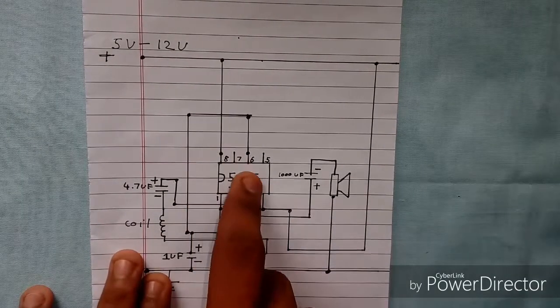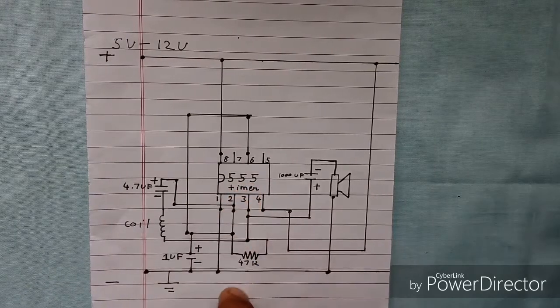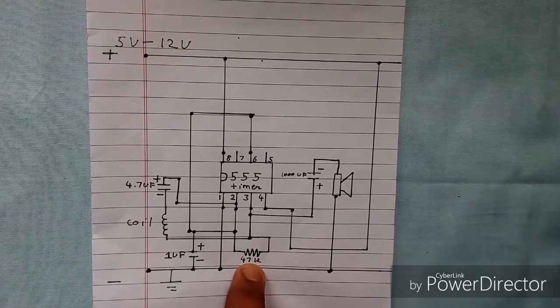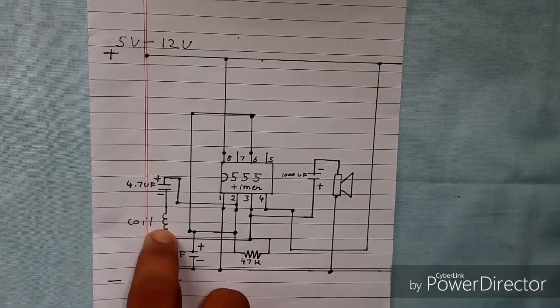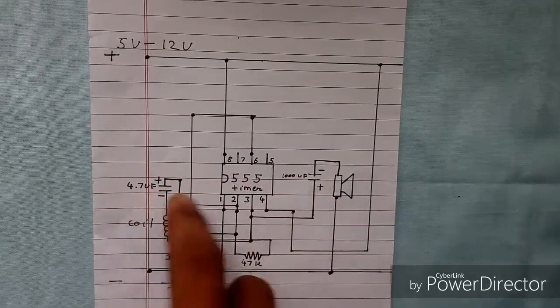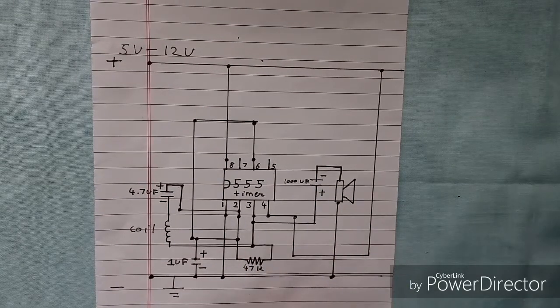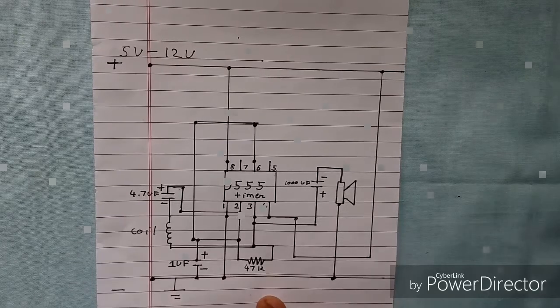The circuit looks something like this. It consists of a 555 timer, which is also called an NE555. Here is your resistor, capacitor, coil, also some two capacitors and a speaker. This circuit works under voltages from 5 to 12 volts.